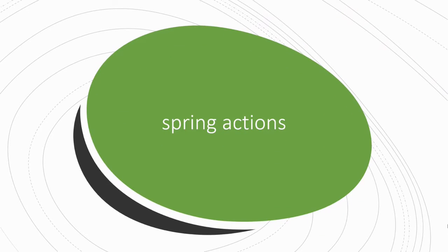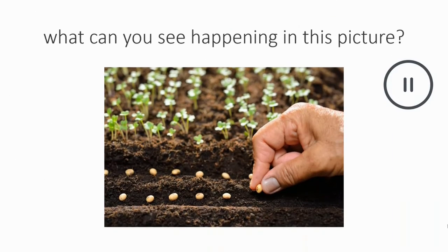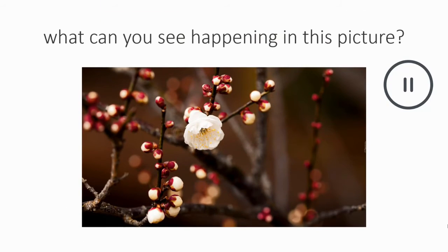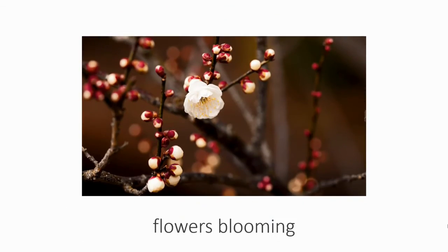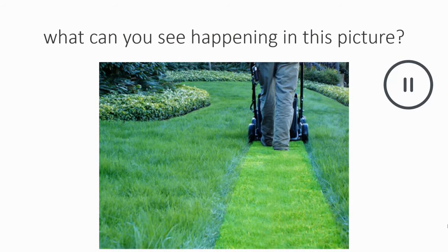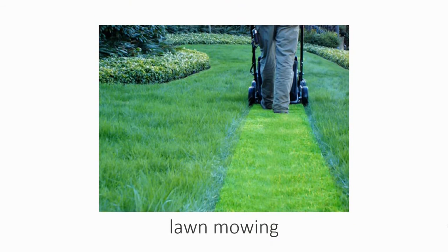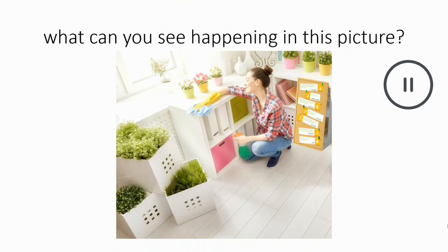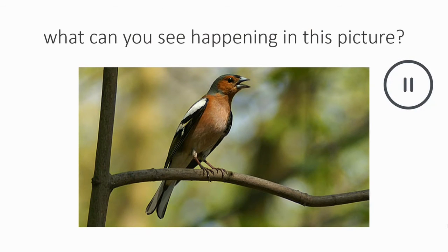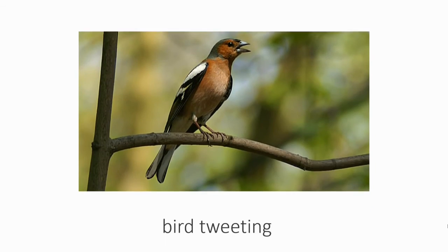Today we are going to talk about actions typical for springtime. What can you see happening in this picture? Sowing. What can you see happening in this picture? Flowers blooming. What can you see happening in this picture? Lawn mowing. What can you see happening in this picture? Spring cleaning. What can you see happening in this picture? Bird tweeting.